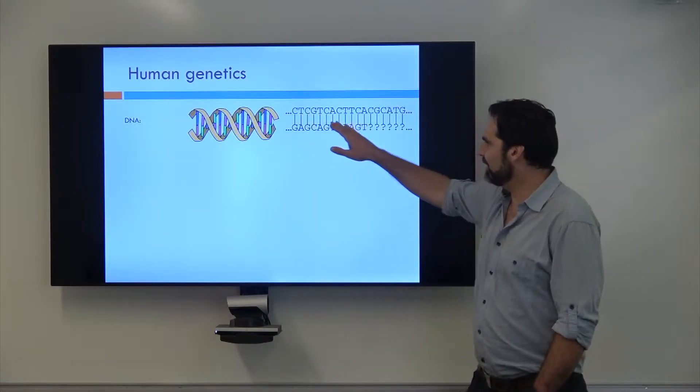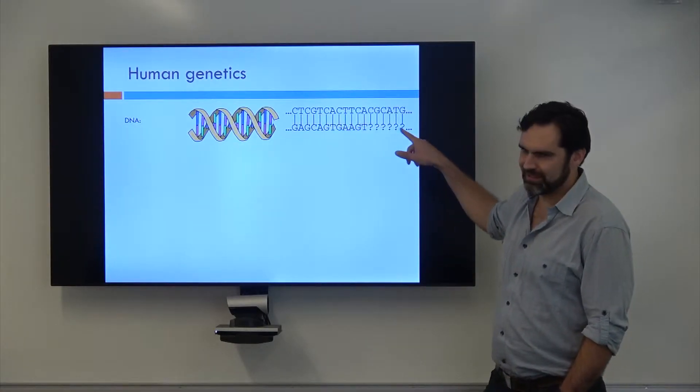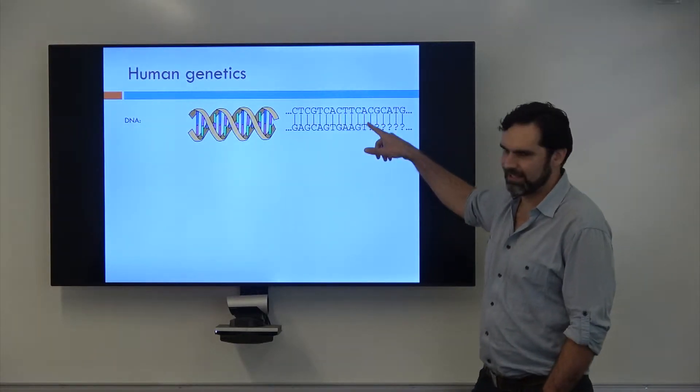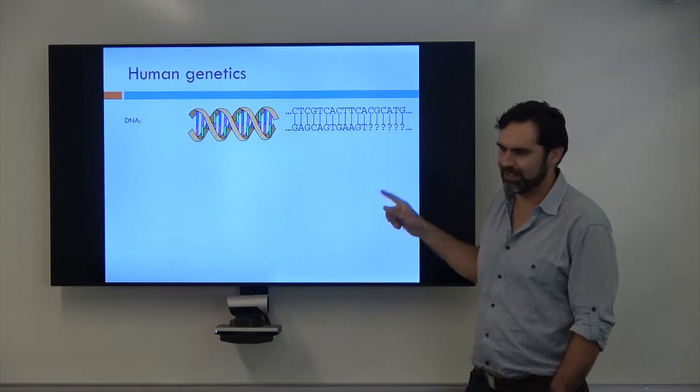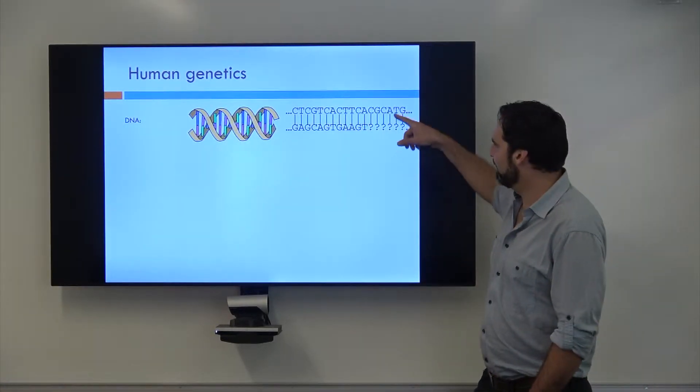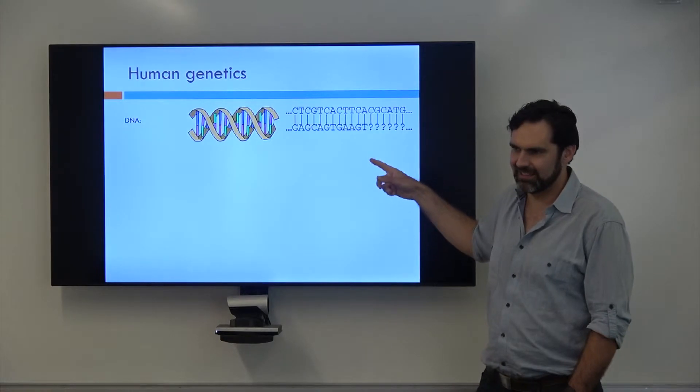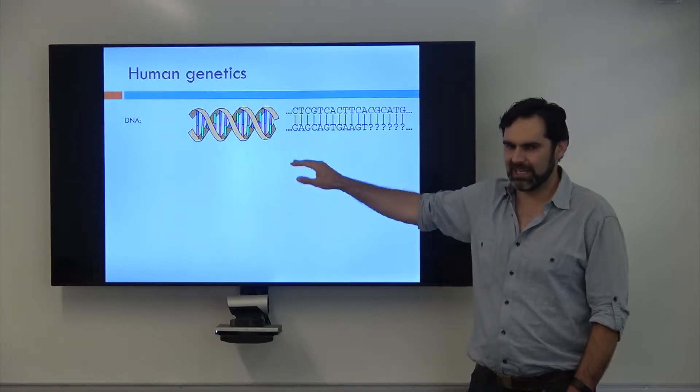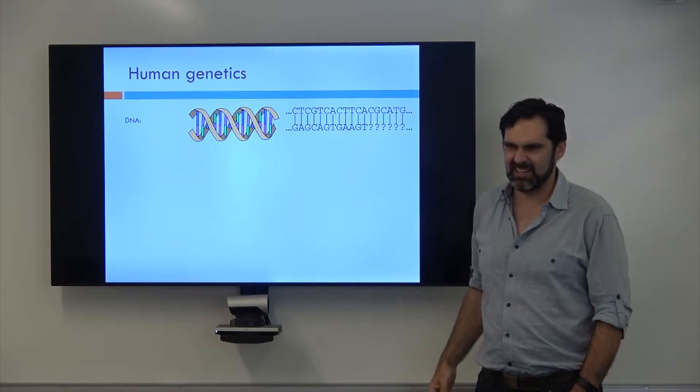So if we keep looking down this strand I've got some question marks down here so if I have a C on one strand what's on the other strand? It's a G right? And so if I have an A then the other side is a T. So does knowing the second strand give me any information? Not really right?